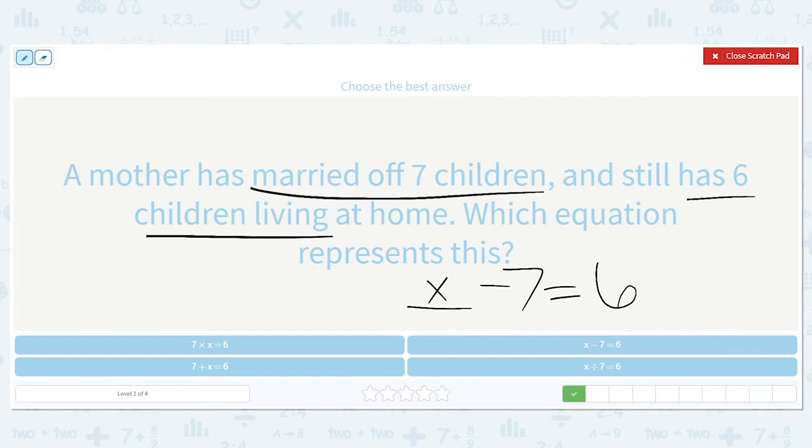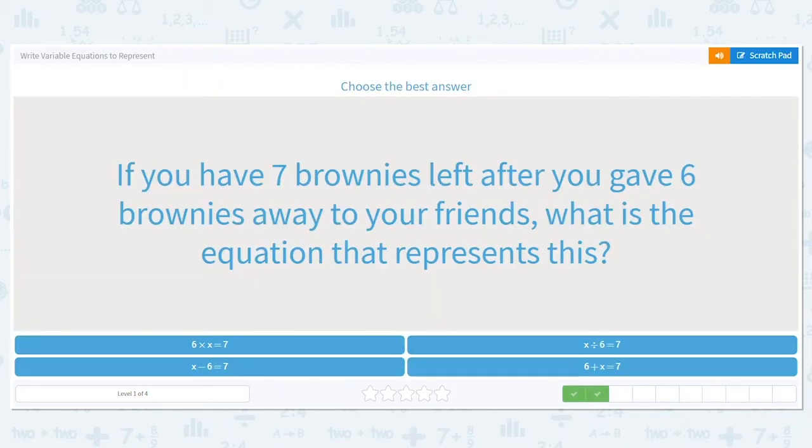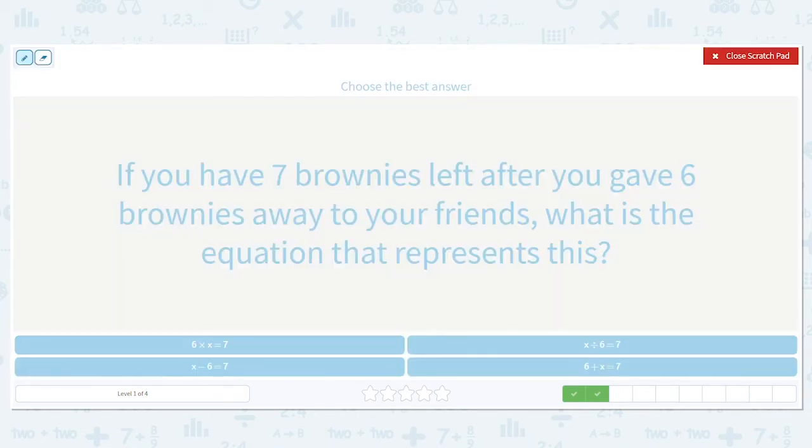All right, next one. If you have seven brownies left after you gave six brownies away to your friends, what is the equation that represents this? And you see that I'm underlining and marking my key words and key numbers. That's all to help.